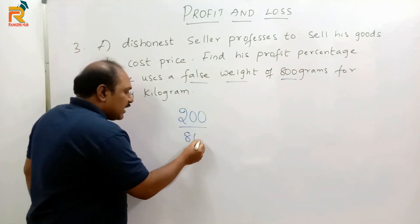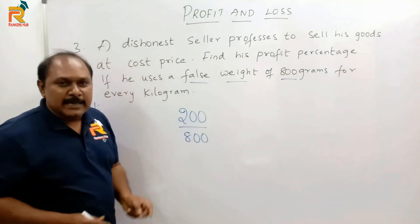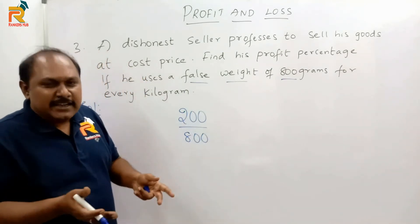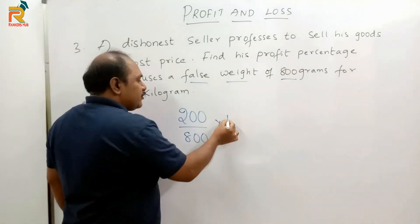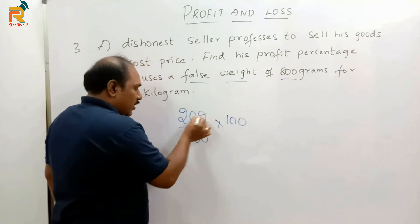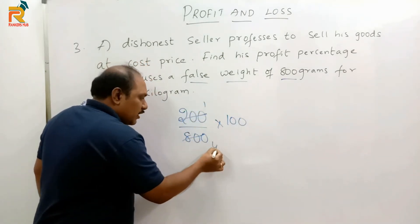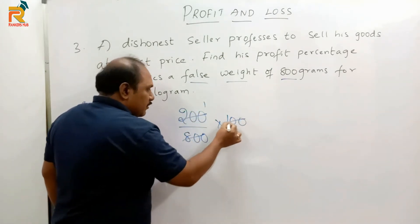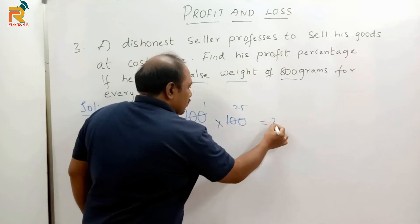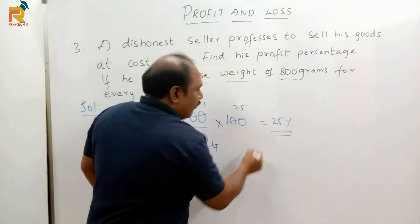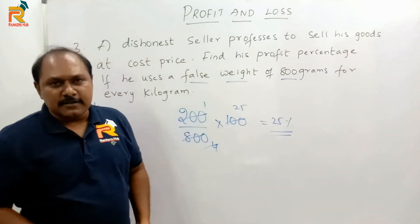The shopkeeper sold only 800 grams, not 1000 grams. So the profit of 200 grams is on 800 grams sold. As a percentage: 200 divided by 800 equals 1/4, and 1/4 equals 25%. So he earns a profit of 25%.